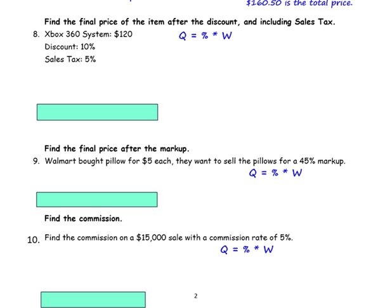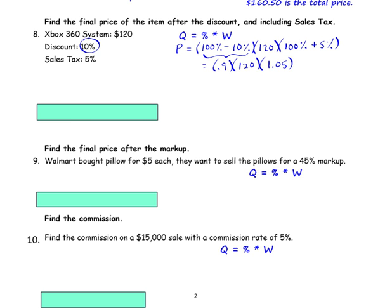Number 8: find the total price of the item after the discount, including the sales tax. We're looking for the final price and will work with two percents. First, deduct the discount: 100% minus 10% gives 90%, which is 0.9. Multiply by the cost of $120 to get the sale price. Then add the tax to 100%: the tax rate gives 1.05. Multiply those together to get the total of $113.40. Since this is a money problem, answer in dollars and cents.